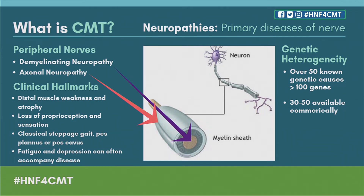Clinical hallmarks are similar in both types, although they can appear at different times. Usually weakness is worse in the lower parts of the legs and the lower parts of the arms. In addition to weakness, there's a lot of problems with balance, which comes from difficulties with proprioception — sending the message from your feet to your brain about where you are in space. Fatigue is also a common part of CMT.